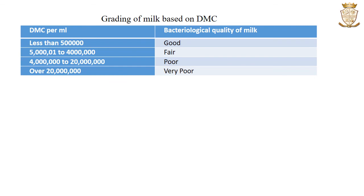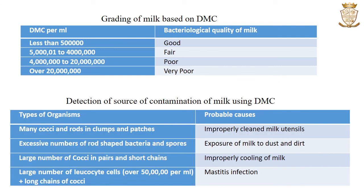Grading of milk based on direct microscopic count: a microbial count less than 5 lakh indicates good quality milk; 5 lakh to 40 lakhs indicates fair quality; 40 lakhs to 200 lakhs indicates poor quality; and over 200 lakhs indicates very poor quality. We can also infer the source of contamination from the results. The presence of cocci and rods in clumps and patches indicates improperly cleaned milk utensils. Excessive numbers of rod-shaped bacteria and spores indicate exposure of milk to dust and dirt. Large numbers of cocci in pairs and short chains means improper cooling of the milk. Large numbers of leukocyte cells together with long chains of cocci indicates mastitis infection of the animal.